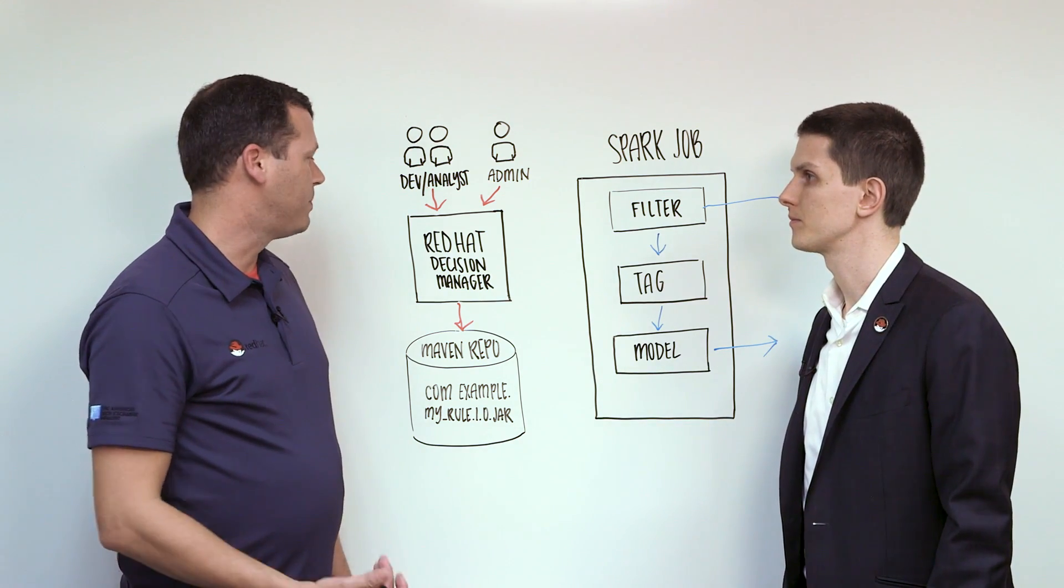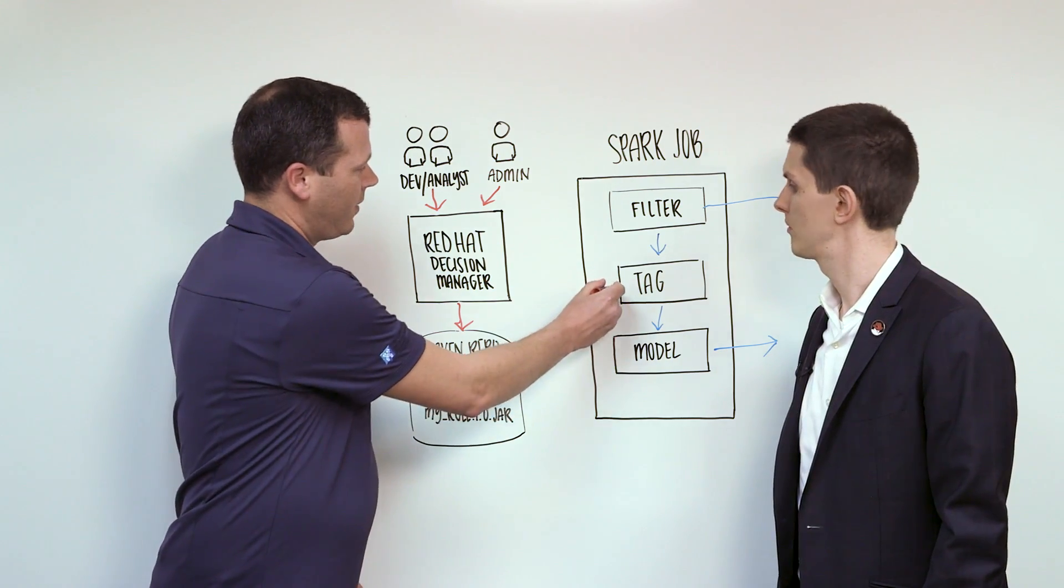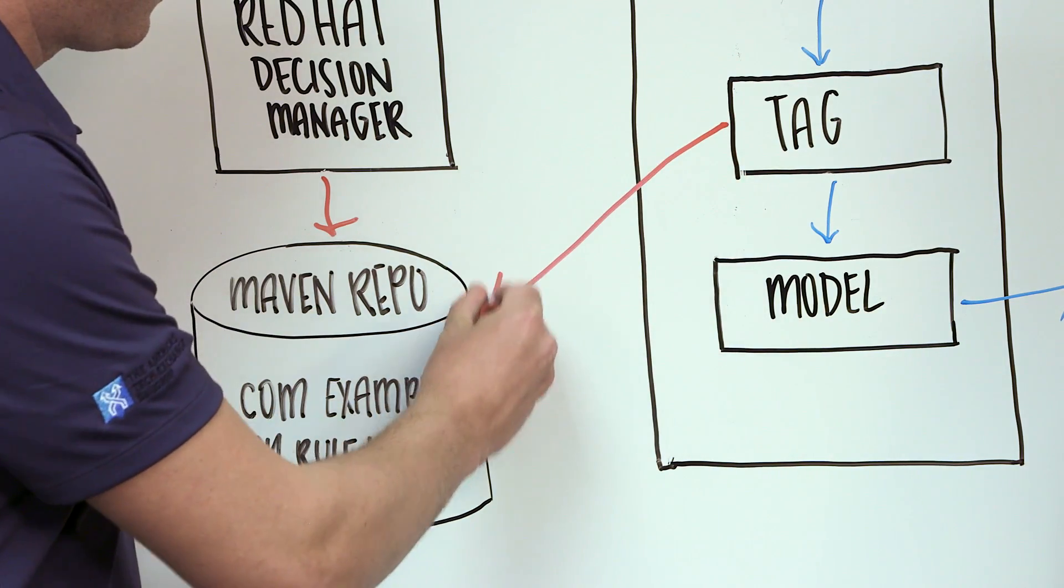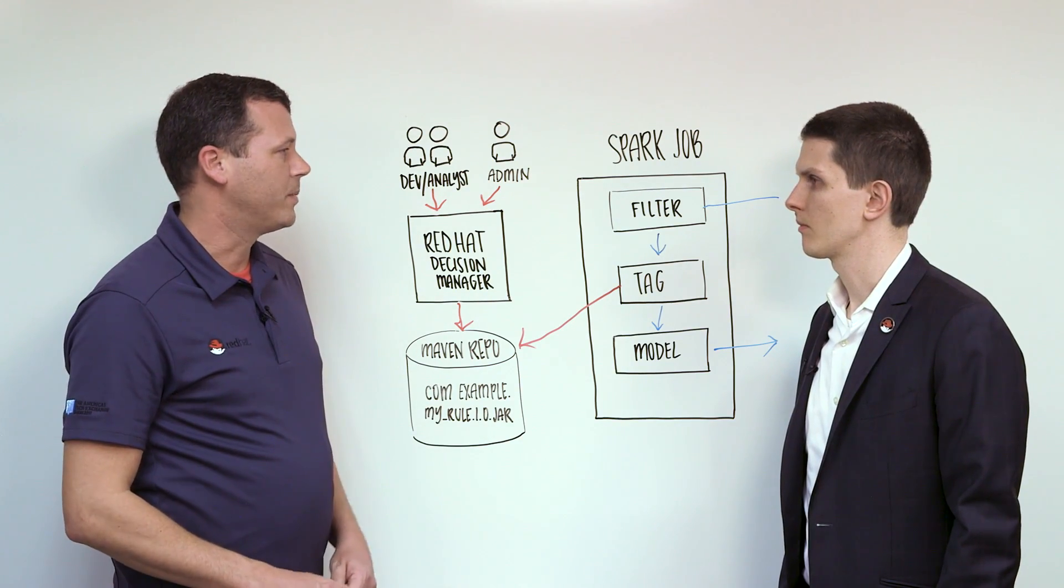Using the Rule Decision Manager API, which is called Key, you can then call into the Maven repository to load those rules into your application's memory.